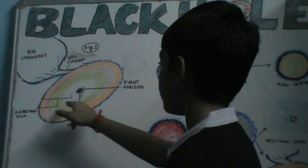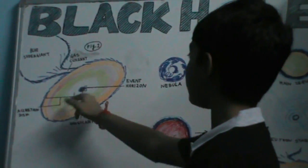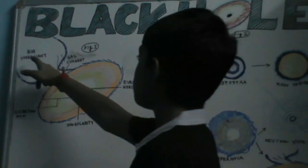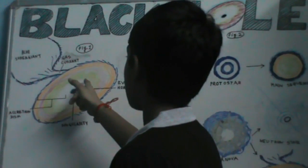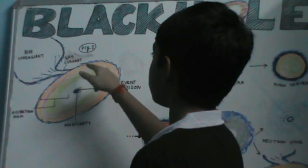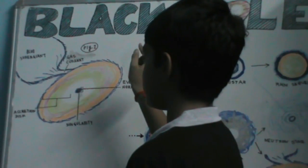This is the accretion disk — the gas which is spiraling around the black hole. This is a blue super giant star, and the black hole is pulling a stream of matter, a gas current, from the blue super giant.